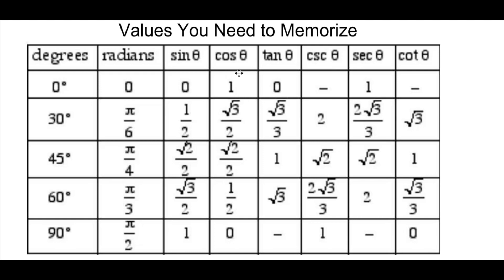Likewise, cosine of 0 is 1. Cosine of pi over 6 is root 3 over 2. Cosine of pi over 4 is root 2 over 2. And cosine of 1 half, or cosine of pi over 3, is 1 half. Cosine of pi over 2, 0.